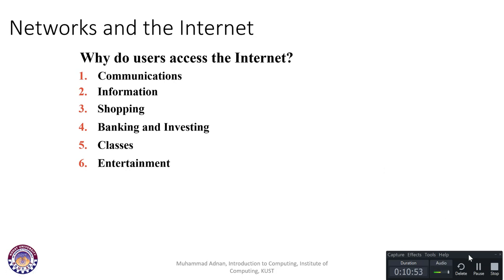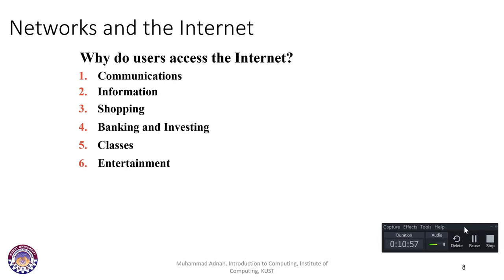Why do users access the internet? The internet is a type of network primarily used for communication and sharing information — for example, sharing this video lecture. We share information with family and friends: pictures, text, videos, audio. There is also online shopping, which saves a lot of time and energy, and allows you to analyze different options before buying something.